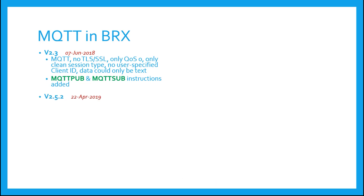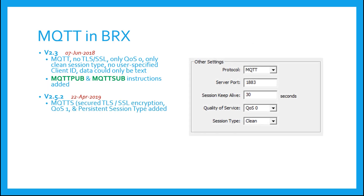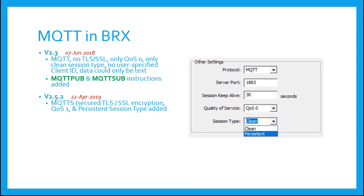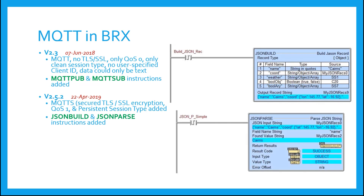Version 2.52 came out in April of 2019. In this version, TLS and SSL encryption was added, a QoS of 1 was supported, and a persistent session type was added. Also, two new instructions were added that can be useful when using MQTT. Many times data you get from a topic comes back in the popular JSON data format, so to aid in this data format — both sending and receiving — instructions JSON Build for building your own data in JSON format, and JSON Parse for interpreting data you receive in this format, were added.